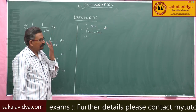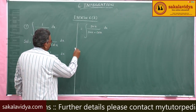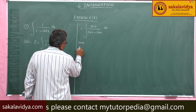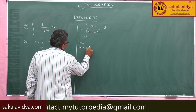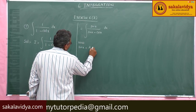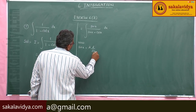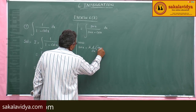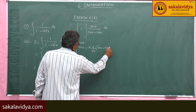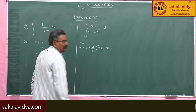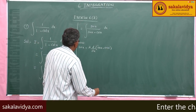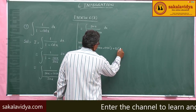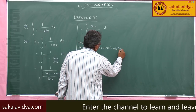Now, consider sin x equal to A times d/dx(sin x - cos x) plus B times (sin x - cos x).